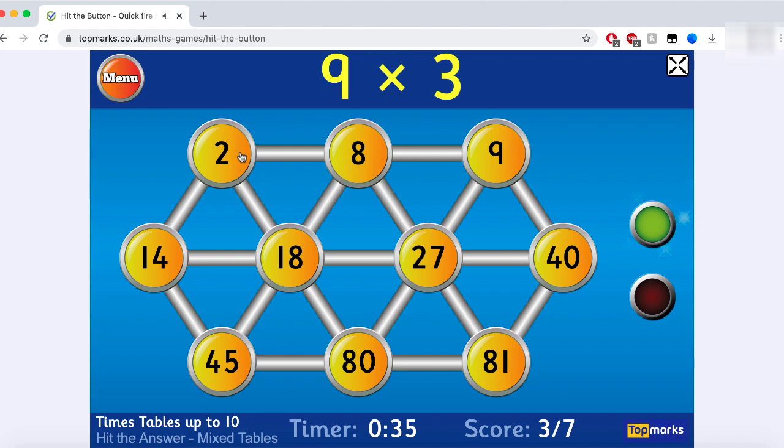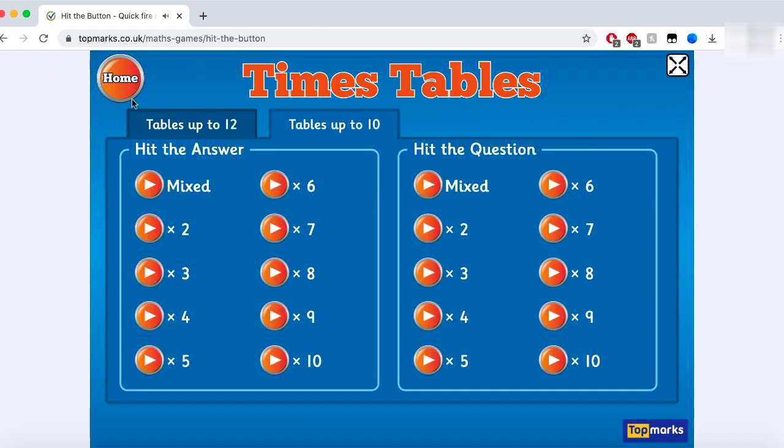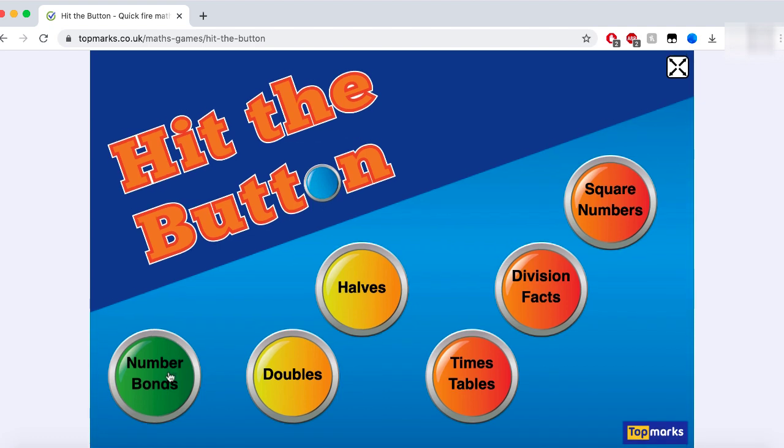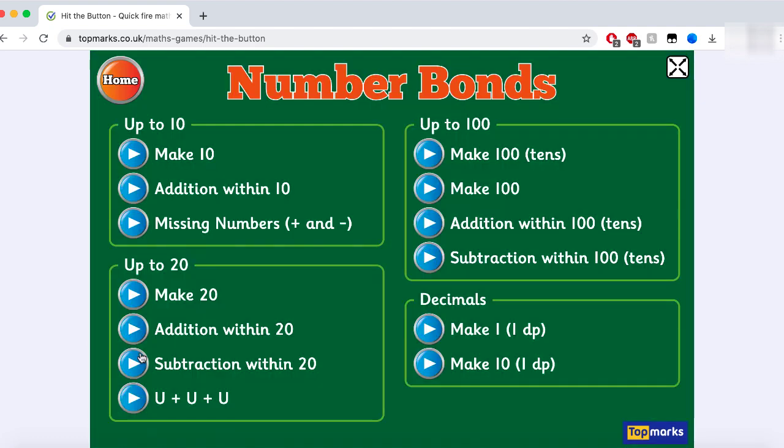If multiplication is not quite where you're at at the moment, there's not a big deal. All we need to do is go into this section here that says number bonds and we can look at different mathematical problems to challenge yourself with. We could be looking at numbers up to 10, numbers up to 20, and numbers up to 100. We can look at number bonds, so numbers that make 10, numbers that make 20, numbers that make 100 in tens, or we can look at addition within these numbers.